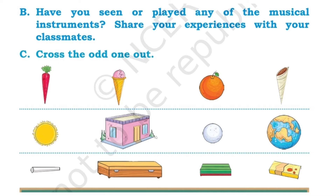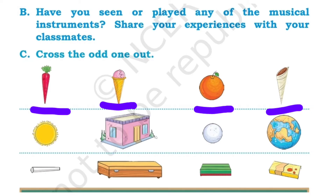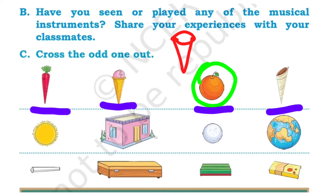The next one is cross the odd one out. We have some pictures of eatables and some images — compare with the shapes and find the odd one out. On the first row, we have a carrot, an ice cream cone, an orange and another ice cream. The common shape is cone. Carrot is a cone shape, yellow ice cream is also cone shape. But the orange is in a circle shape — the 3D image of a sphere. So that is the odd one out.